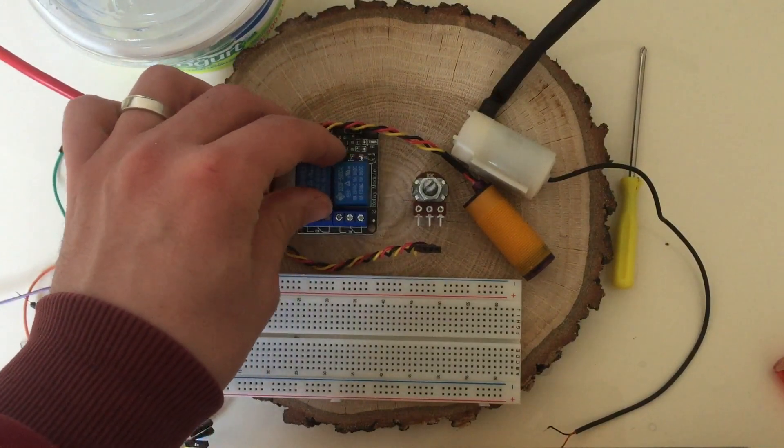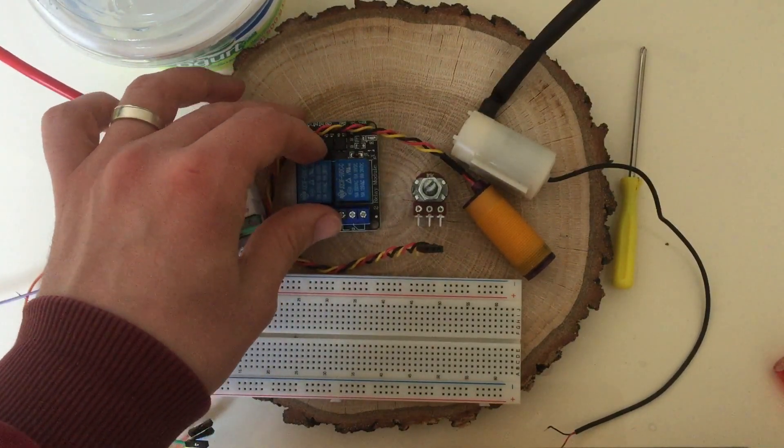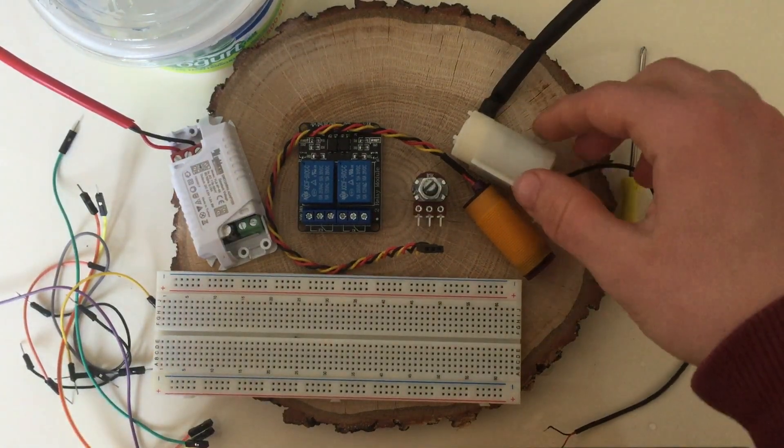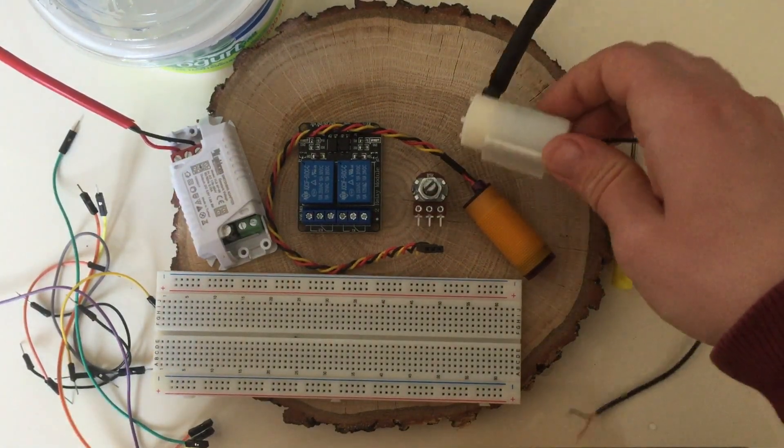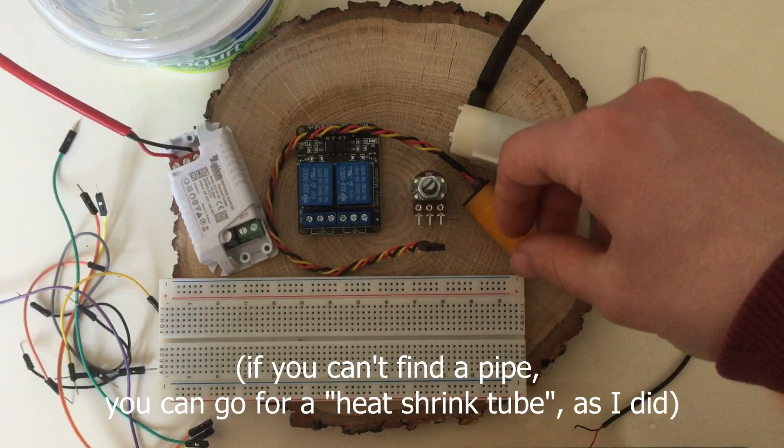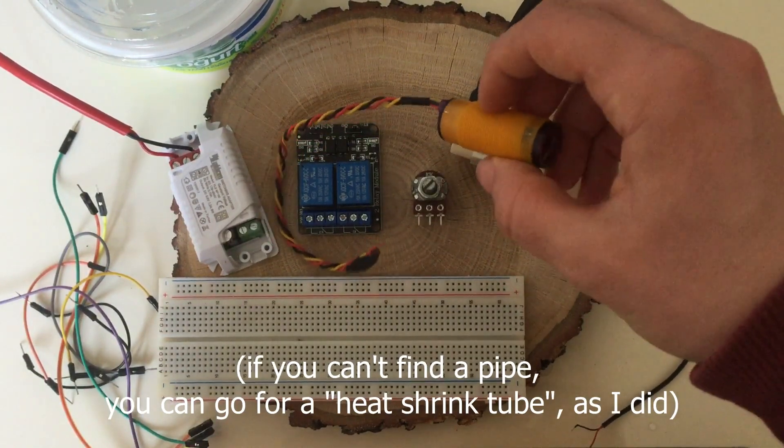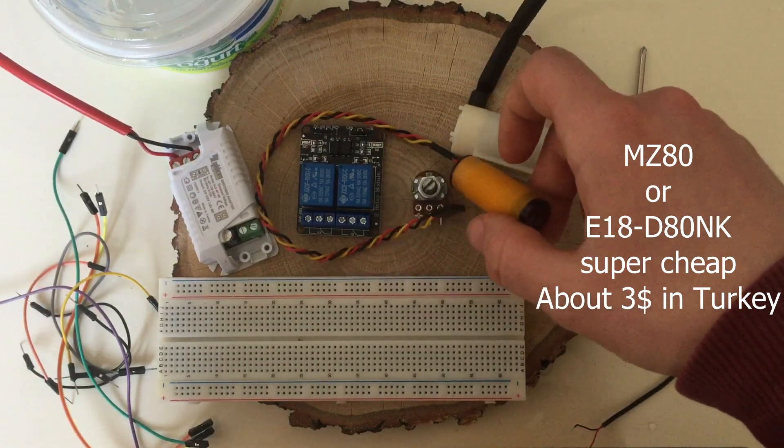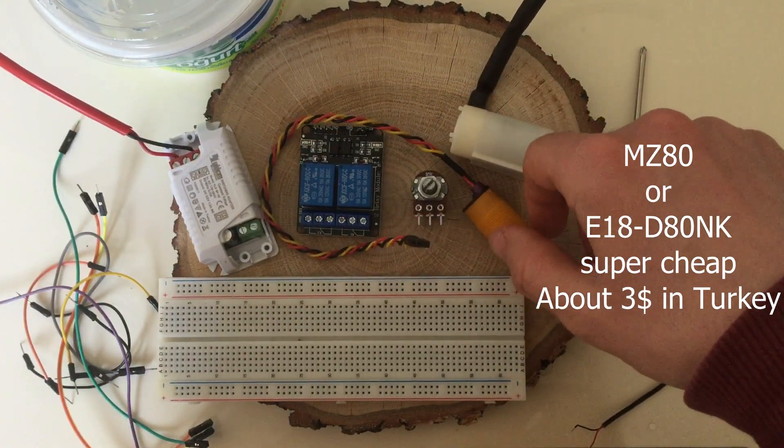Next, we need a 5V supplied relay module to switch the pump on and off. A single relay is enough for our project. We will also need a 5V pump and a fitting pipe. We need a photoelectric proximity sensor. This is an MZ80 also known as E18D80NK.